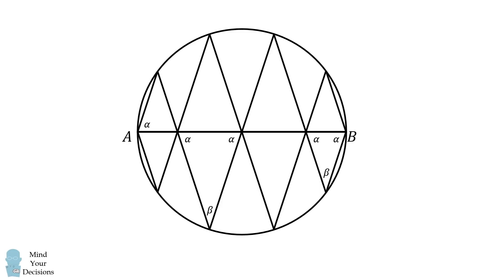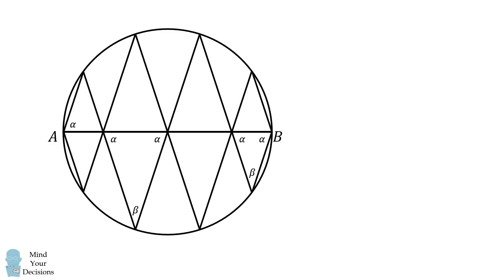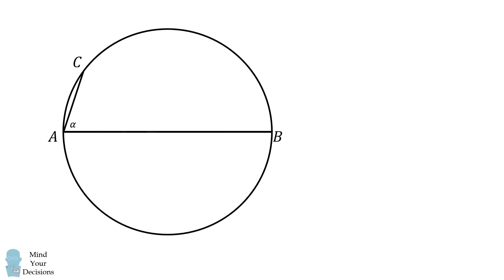From here, we're going to consider the measure of the arc BC. We'll calculate it in two ways. First, CAB is an inscribed angle of the circle with an angle equal to alpha. Therefore, BC will be equal to 2 alpha.